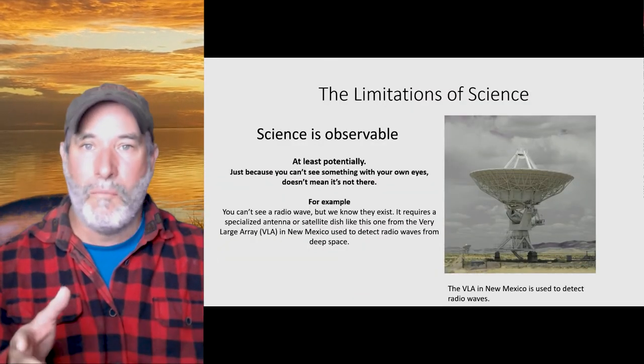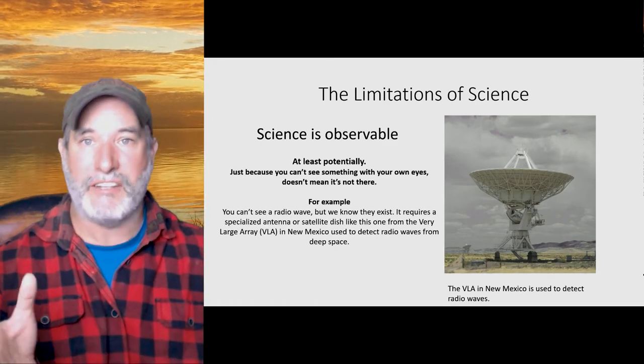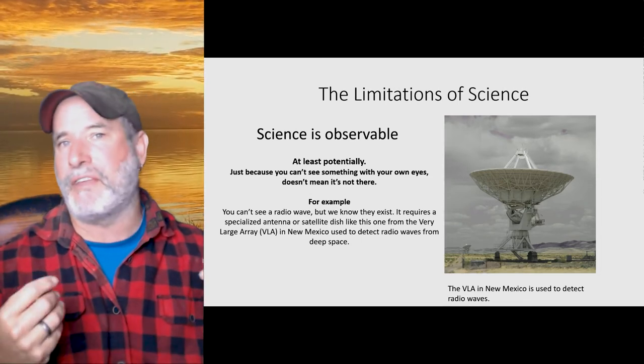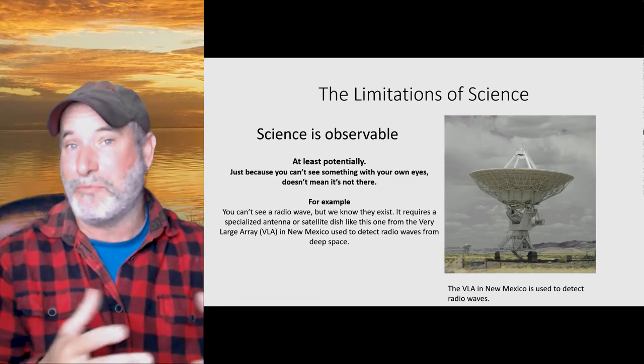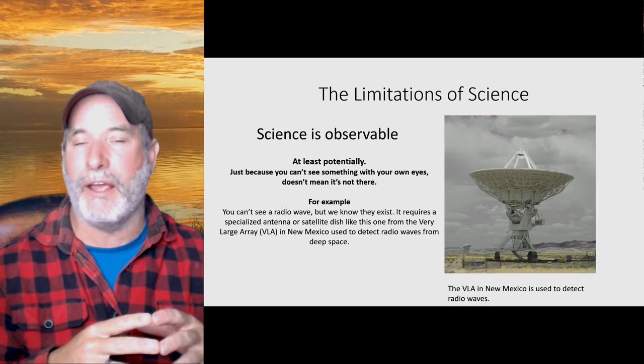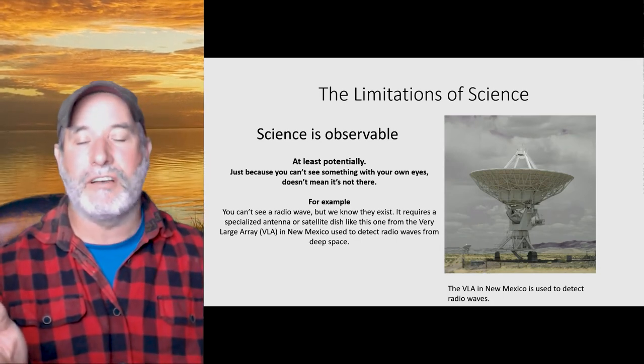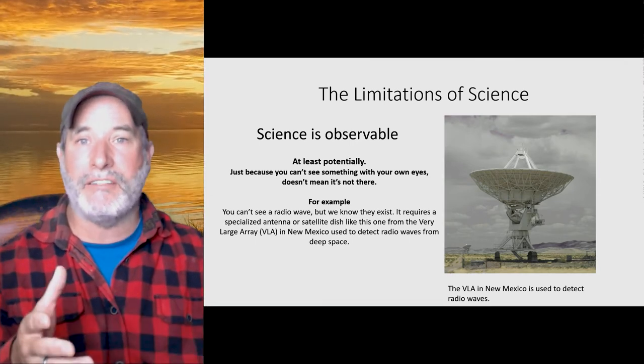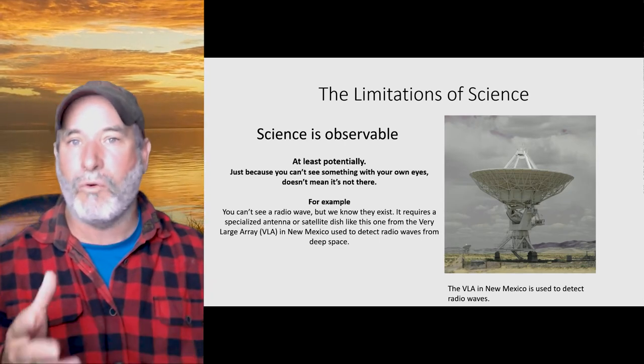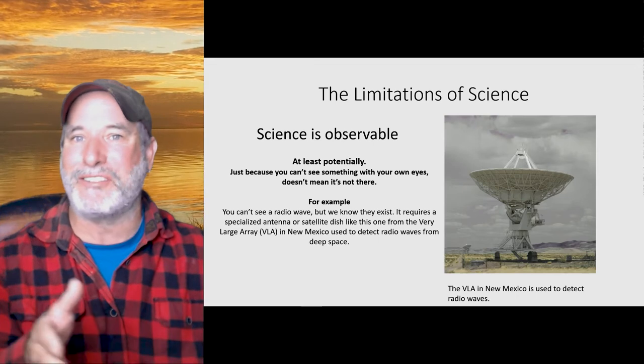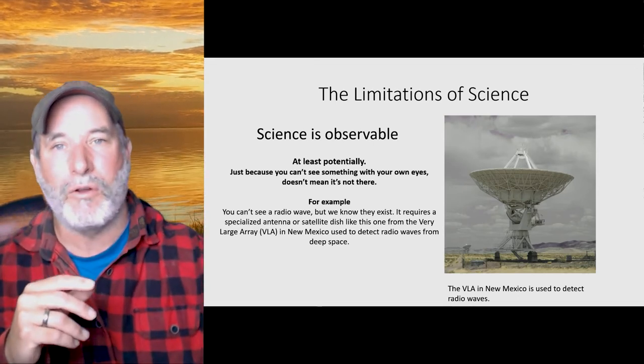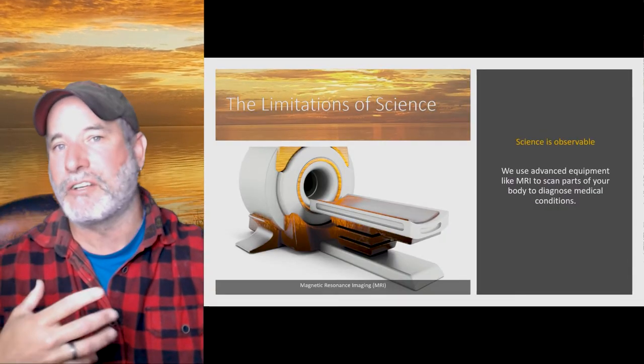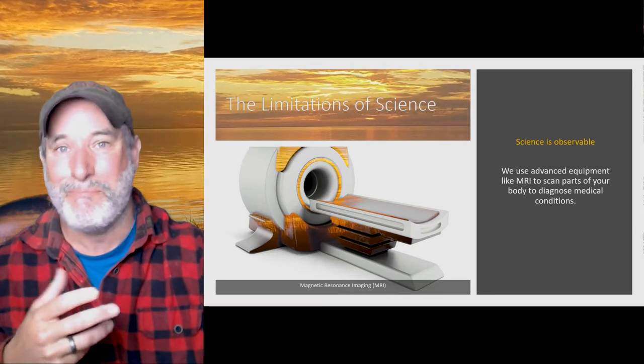Now, I say at least potentially, nobody can see a radio wave. You can't see them. They just, radio waves are part of the electromagnetic spectrum, but they don't have enough energy to interact with any protein to cause some shape change like visible light does. Now, just because you can't see a radio wave doesn't mean it's not there. This is, of course, a satellite dish from the very large array, the VLA down in central New Mexico, and it takes special equipment, in this case, to see a radio wave. That's why it's at least potentially, right? Because until we discovered them, nobody knew about them, but they were there. It just took some advances in technology. We also use MRIs, magnetic resonance, to look inside your body. It's kind of cool. We can diagnose a lot of different medical conditions with this thing.